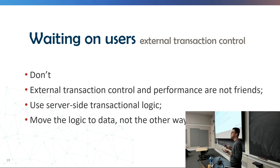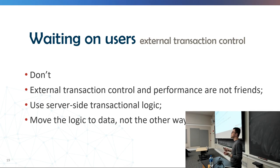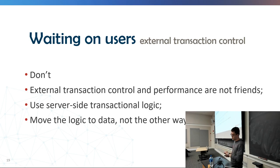The solution is that we don't provide users the ability to start a transaction, run some queries, and commit. Instead, we move the logic from the client side to the server side — we push the logic to the data. If you use external transaction control, you introduce waiting time and network round-trip time, so you have to introduce concurrency to hide that latency. We push the logic to the data, not the other way around.